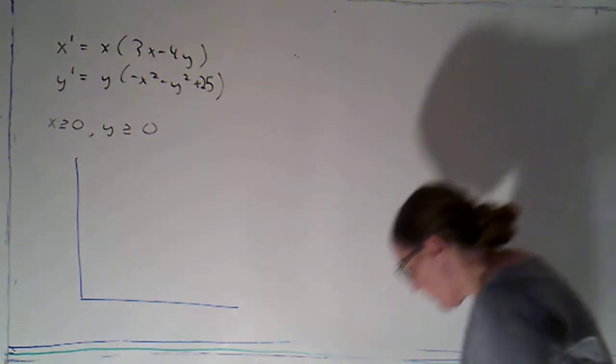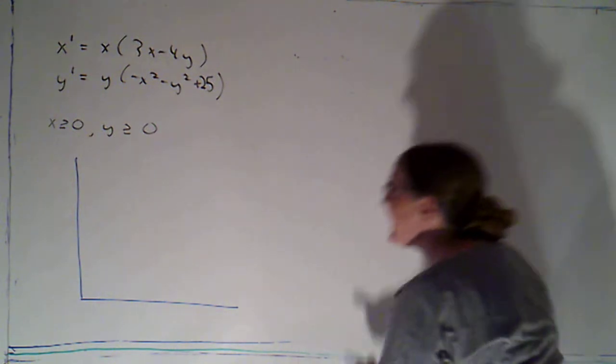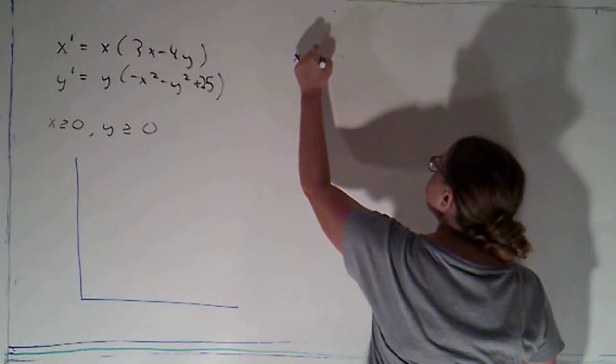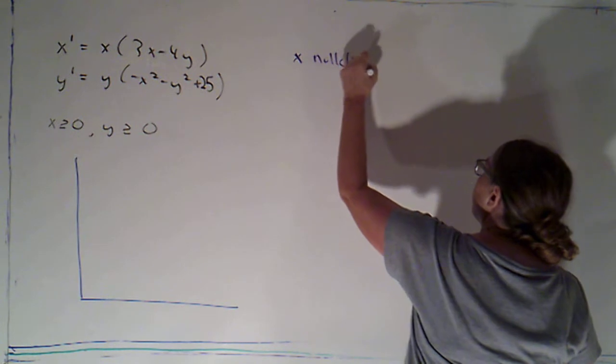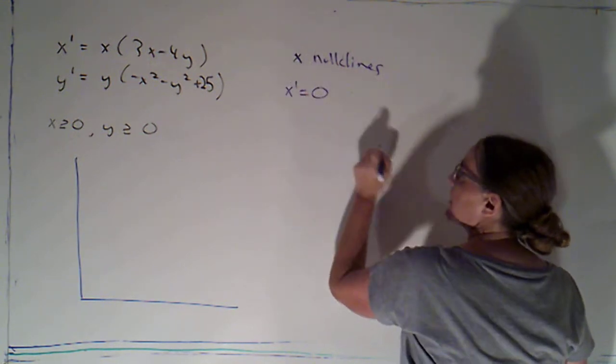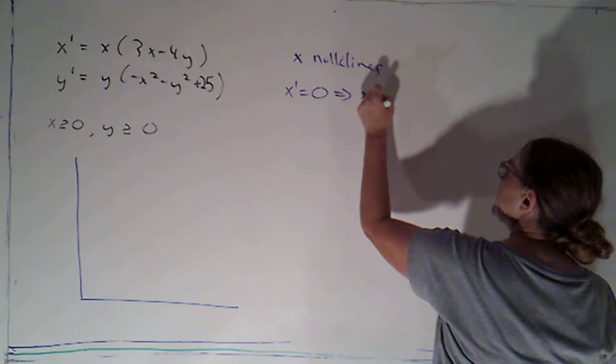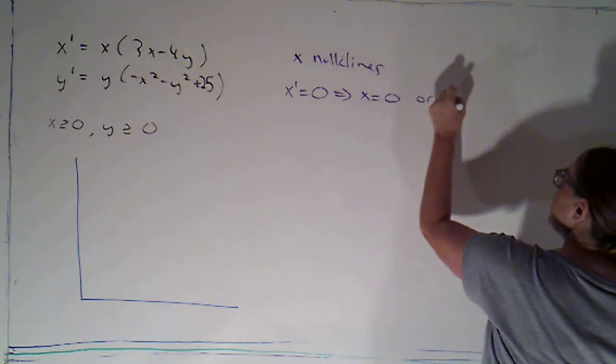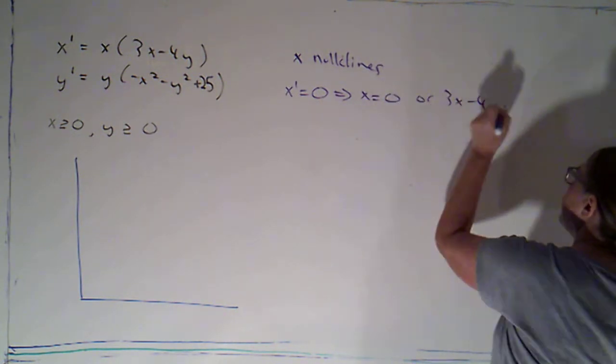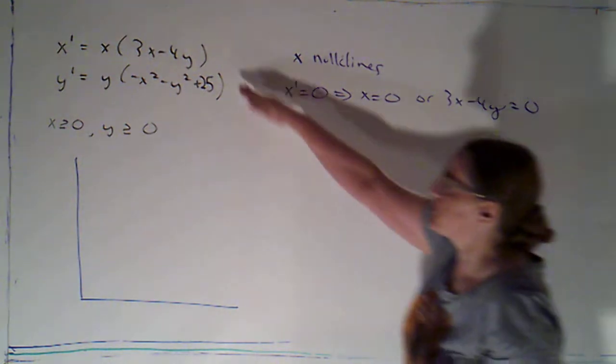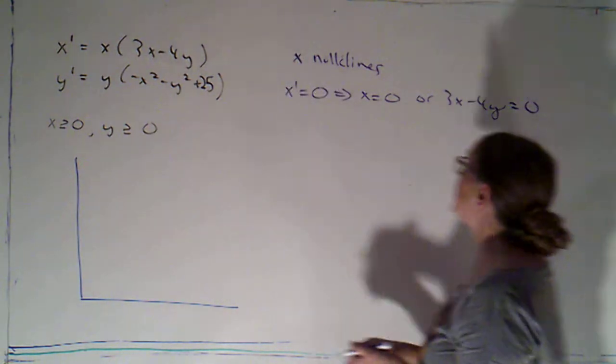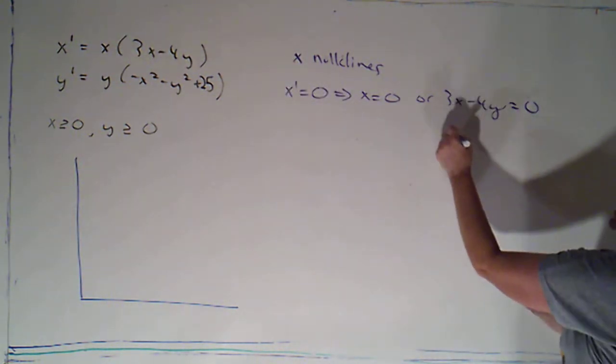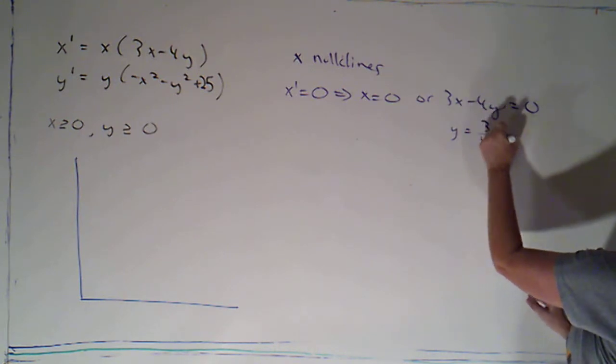Okay, so I'm going to start with my x nullclines. So if x prime is equal to zero, that's going to mean that either x equals zero, or 3x minus 4y is equal to zero. Those are the two factors we have in x prime here. Solving this one for y, I get y is equal to 3 fourths x.